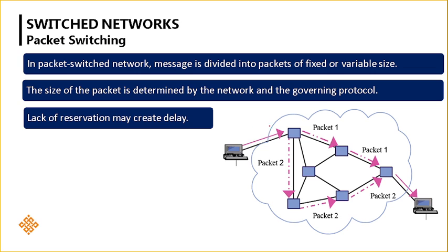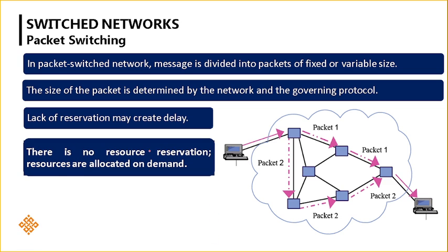Lack of reservation may create a delay because we are not creating any leased path here. There is no fixed path; the resources are not reserved and all resources are allocated on demand. In circuit switching, there is a fixed path — before transmitting the data, first we need to fix the path. But here, each packet may move in its own direction. There is no resource allocation, which may cause more delay. Based upon the traffic or cost, the switch will decide which direction the data takes.